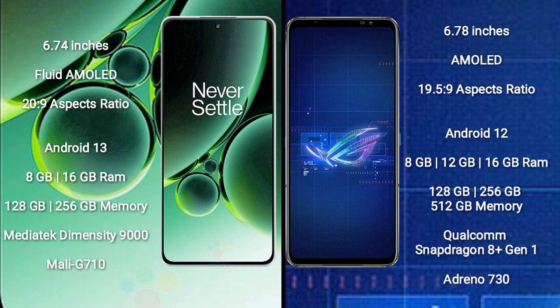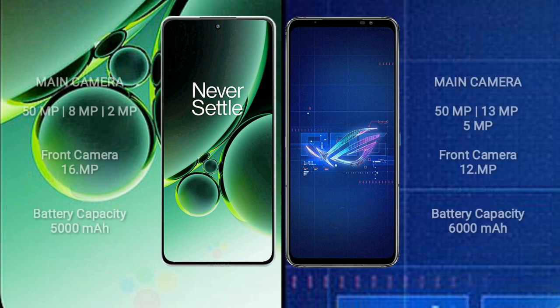Asus ROG Phone 6 comes with 8GB, 12GB, and 16GB RAM options, and 128GB to 512GB internal storage, powered by a Qualcomm Snapdragon 8 Gen 1 processor and an Adreno 730 GPU.